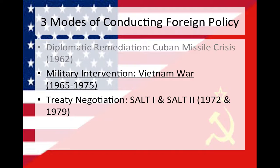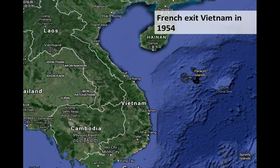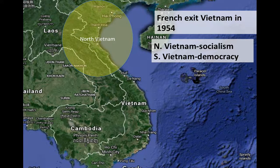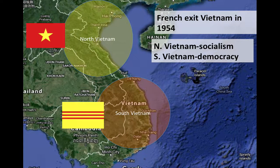Now let's look at military intervention during the Vietnam War. Vietnam used to exist as two countries, North and South Vietnam. When the French exited in 1954, North and South Vietnam split. Northern Vietnam, starting just north of Da Nang going north to Hanoi, was the socialist part of the country, while South Vietnam was the democratic part. You'll notice the two flags — the top is the current flag of Vietnam today, whereas the bottom illustrates what was South Vietnam.